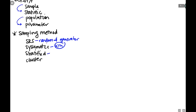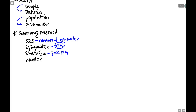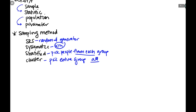Stratified and cluster are the only things from part one I'd consider putting on your note card if you mix them up. In stratified sampling, we pick people from each group — the groups are similar in nature and we take a little bit from each. Cluster is when we pick entire groups, then take all the people in them. The key distinction: did you pick people or did you pick groups?